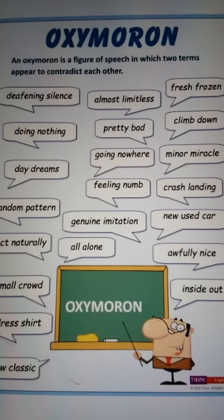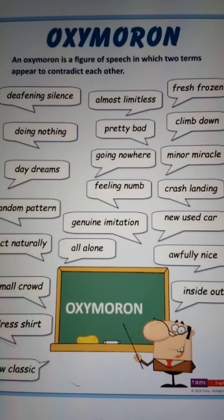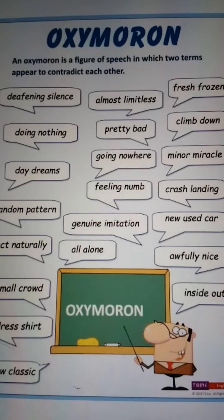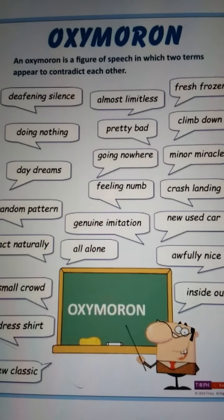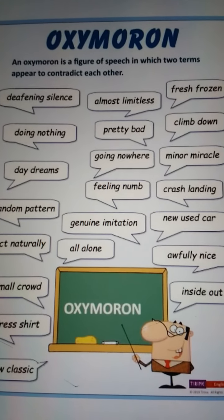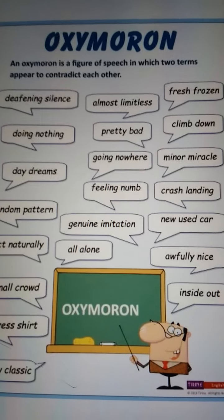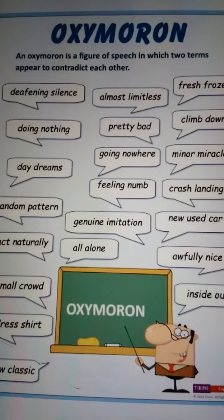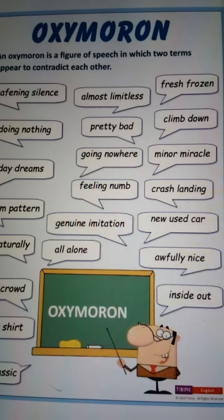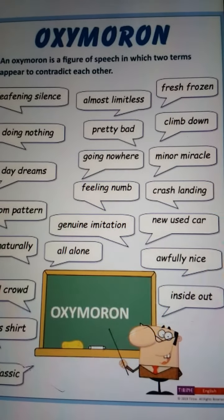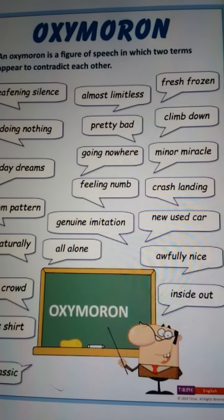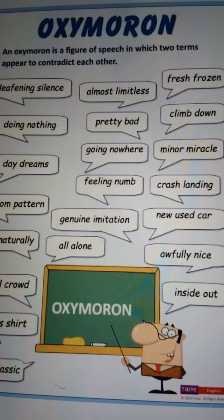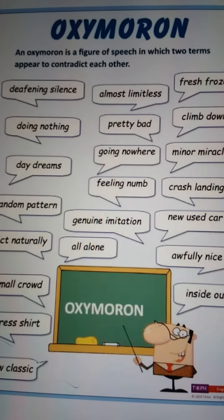'Going nowhere' — अगर जा रहे हैं तो कहीं नहीं जाना possible कैसे है। 'Feeling numb' — जब feeling है तो numb कैसे होगा। इस तरह से oxymoron का use होता है — दो words एक साथ आते हैं लेकिन दोनों contradictory होते हैं। 'Genuine imitation,' 'all alone,' 'fresh frozen,' 'climb down,' 'minor miracle,' 'crash landing,' 'new used car,' 'awfully nice,' 'inside out' — यह सारे oxymoron के examples हैं।